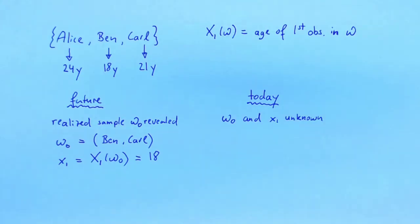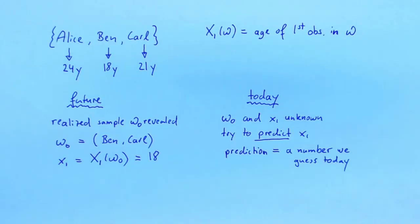Today, we don't know what the realization of x1 will be, but we can try to predict it. For our purposes, a prediction is a number that we use today as a guess for the future value of x1. We don't want to just predict any number — we want to make good predictions. Suppose that we predict 50, given that the oldest person in the population is 24. No matter who we end up sampling, the true value of x1 will be substantially smaller than 50. Clearly, predicting 24 instead of 50 would have made for a much better prediction.